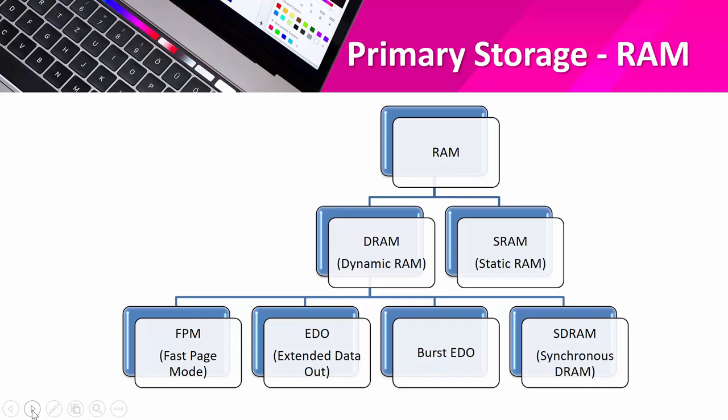As mentioned, there are two main types of RAM: DRAM (Dynamic Random Access Memory) and SRAM (Static Random Access Memory). DRAM has to be refreshed every few milliseconds by rewriting the data — DRAM's data is dynamic, meaning it refreshes every few seconds.